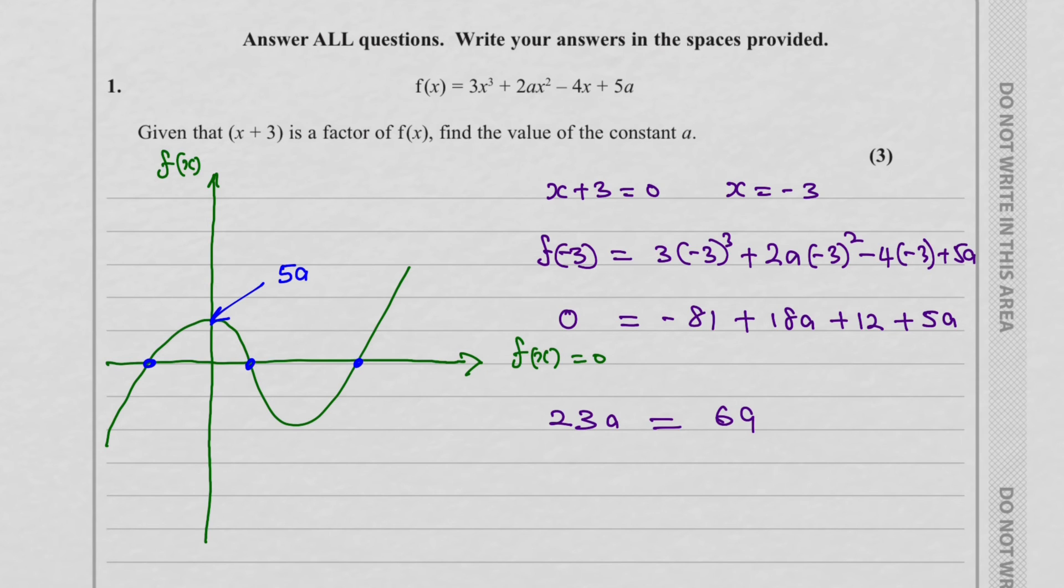And so therefore, a will be equal to, divide both sides by 23, that would be 69 over 23. And a will be equal to 3.